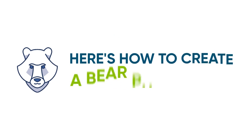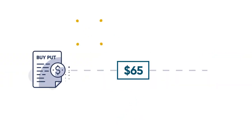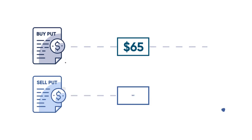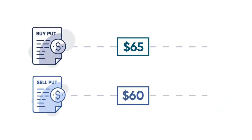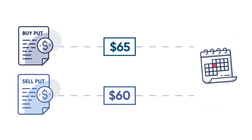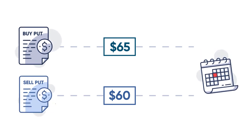Here's how to create a bear put spread. You buy a put option and simultaneously sell another put with a lower strike price, with both puts sharing the same underlying and expiration date.